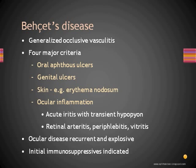Hypopyon is otherwise an uncommon finding in uveitis unless the patient has infectious endophthalmitis. We just saw a patient who presented with hypopyon and had tuberculosis, and tuberculosis should be considered especially wherever the disease is endemic. Otherwise, a transient hypopyon with acute iritis in a young male patient should prompt consideration of Behçet's disease.